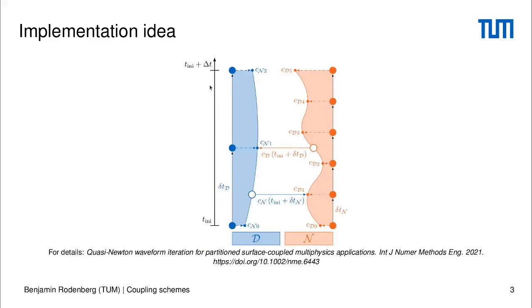Let me show one picture from our paper on quasi-Newton waveform iteration to explain what we actually plan to do. The basic idea is that within one time window, meaning between two calls to advance, we want to do several time steps like in subcycling, and at the same time we also want to interpolate between pieces of data in order to get a smooth approximation to the coupling boundary conditions.